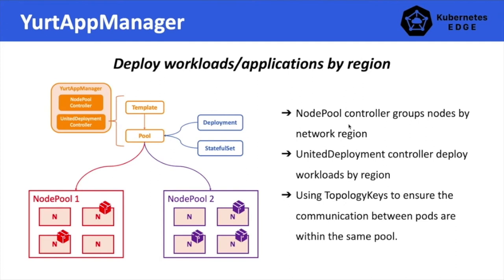The third challenge that prevents using Kubernetes in an edge computing environment is that Kubernetes does not support deploying workloads by regions. Since an edge cluster can be located across multiple network or geographic regions, and system or device settings in different regions may vary, users may want to deploy workloads by region. For example, the system architecture of edge nodes in region 1 may be AMD64, while in region 2 it may be ARM64. If users want to run the same workload in both regions, they have to create two workloads with exactly the same configurations but different container image names, which can cause exponential increases in maintenance effort as the number of workloads grows.